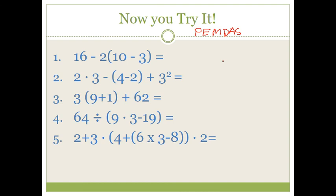By now you should have worked through as many of these as you want. The answer to number 1 is 2. The answer to number 2 is 13. Number 3 is equal to 92. Number 4 is equal to 8. Number 5 is equal to 86. If you didn't get those answers, look through your steps again and see where you didn't follow PEMDAS — or maybe you made a multiplication or addition error.